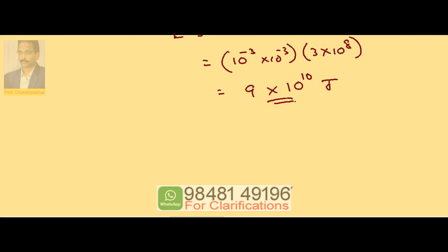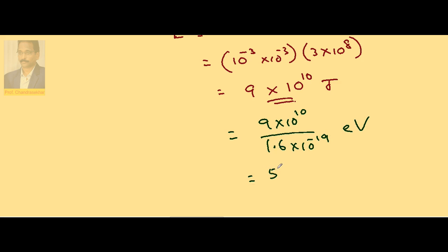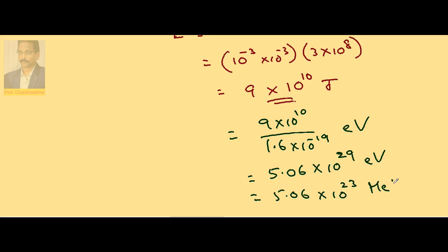Let us convert this into electron volts. So, 9 into 10 to the power of 10 divided by 1.6 into 10 to the power of minus 19 gives the value in electron volts. 9 by 1.6 gives 5.06 into 10 to the power of 29 eV, or 5.06 into 10 to the power of 23 million electron volts.